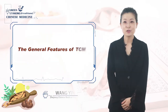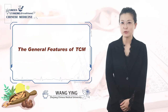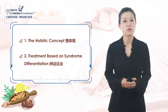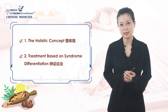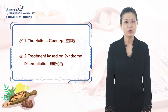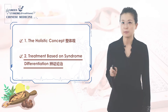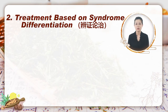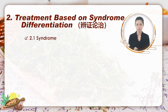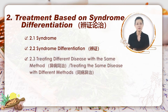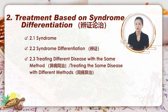Hello everyone, let's continue our class on the general features of TCM. In our last class we explained the holistic concept, one of the fundamental features in TCM. In today's class we are going to learn the second fundamental feature: treatment based on syndrome differentiation. The main content will cover three parts: what is syndrome, what is syndrome differentiation, and two terms — treating different diseases with the same method, known as yi bing tong zhi in Chinese, and treating the same disease with different methods, known as tong bing yi zhi.